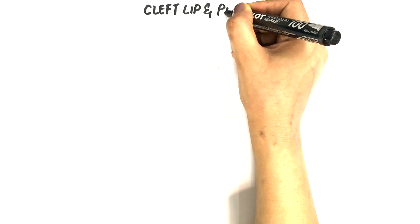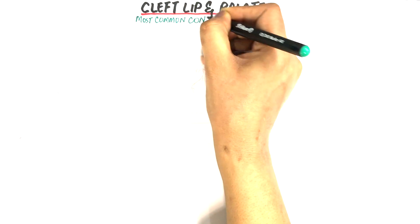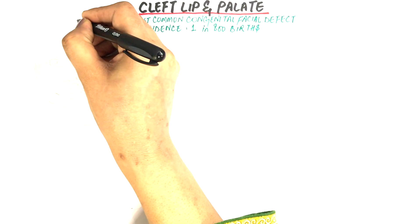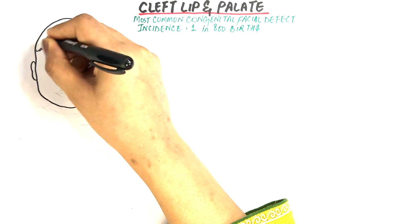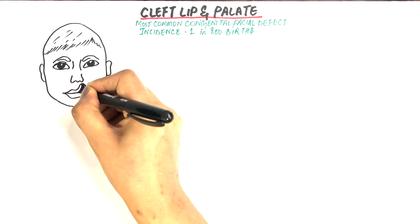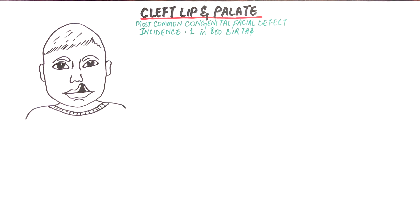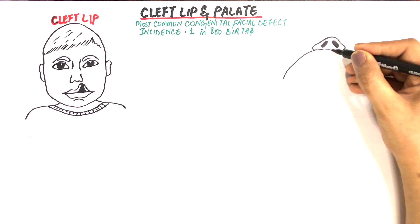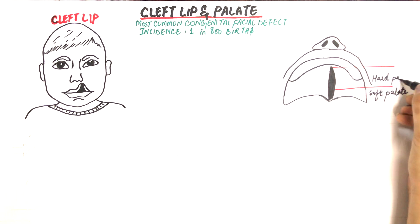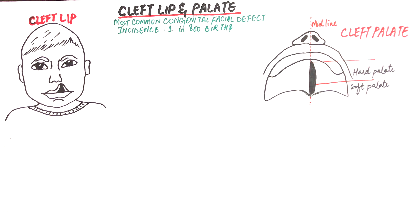Cleft lip and palate is one of the most common congenital facial defects. The incidence of cleft lip and palate is approximately one in every 800 births, and it affects males more often than females. A cleft lip is a congenital condition where there is an opening in the upper lip. Cleft palate, on the other hand, is a congenital situation where the defect or opening exists in either the hard or the soft palate, or both, creating a communication between the oral and the nasal cavity.